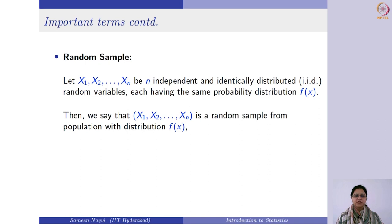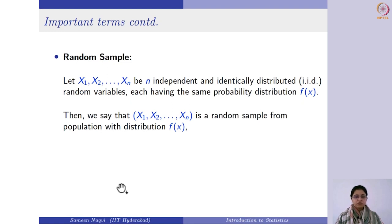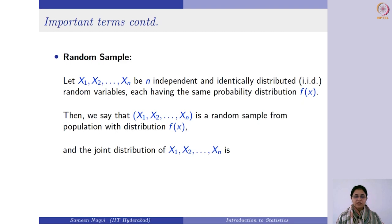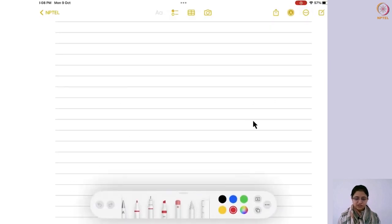If you hear the term 'random sample', it should immediately bring to mind iid random variables — that is, xi are iid random variables. Independent means the outcome of one is not going to impact the outcome of another. Identical means they are coming from the same population or distribution. For random variables, we use capital letters such as Xi or Yi, and once you know their actual realized value, you replace these with the corresponding lowercase xi's.